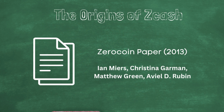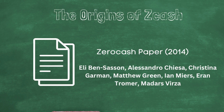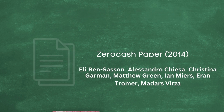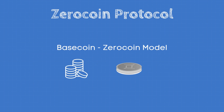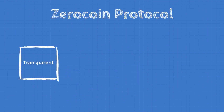The Zerocoin paper, published in 2014, was the first step towards using zero-knowledge cryptography. This was later improved upon in the Zerocash paper. The Zerocoin protocol introduces the Basecoin-Zerocoin model, in which transparent basecoins are burned to mint private Zerocoins.